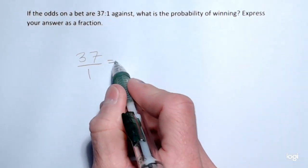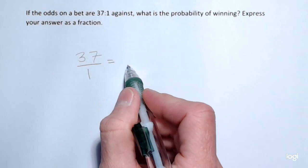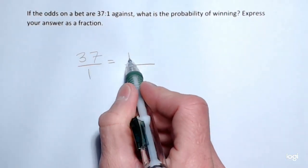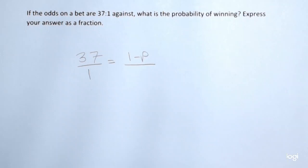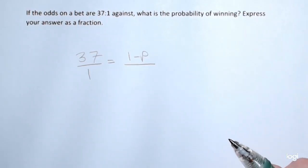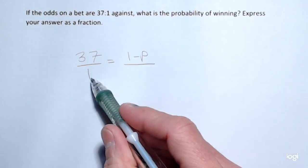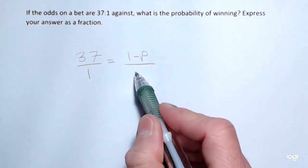And because this is against, I'm going to put 1 minus p, where p is the probability of your event occurring. And in the denominator, I'll have p.